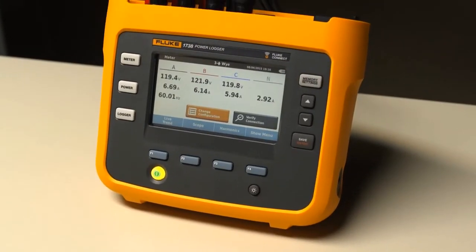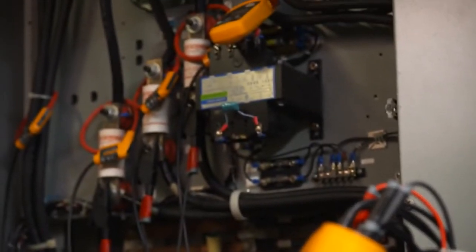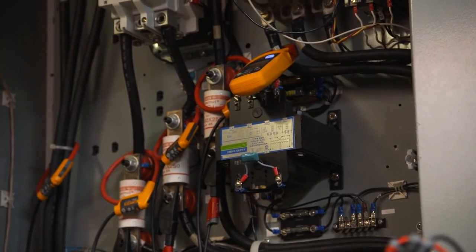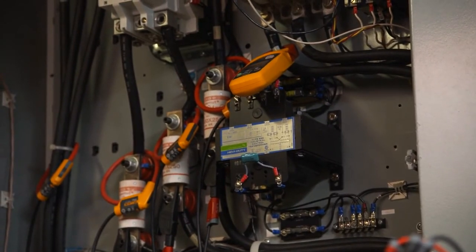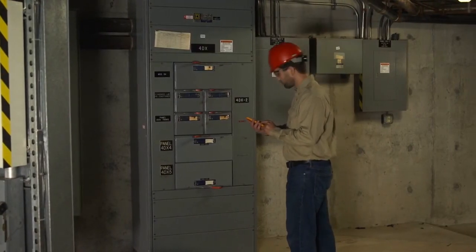And with the 1738, you can now use other Fluke Connect-enabled tools such as the Fluke A3000 FC wireless AC current clamp module to log additional measurements alongside your Fluke 1738. This reduces the need for personal protective equipment.